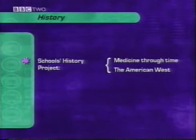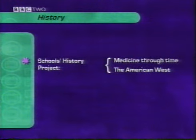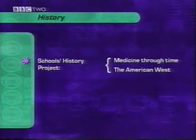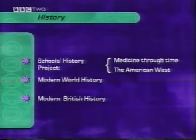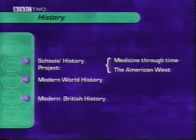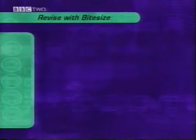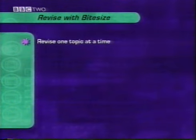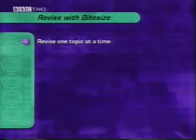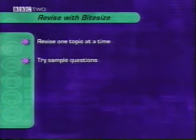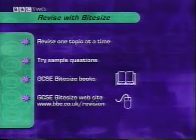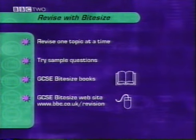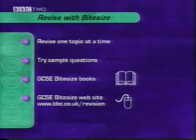This programme on Schools History Project concentrates on Medicine through Time and the American West, two of the most popular courses of the GCSE Schools History Project. The two other programmes on History are Modern World History and Modern British History. There's more in the GCSE Bitesize books and on the GCSE Bitesize website at www.bbc.co.uk/revision.